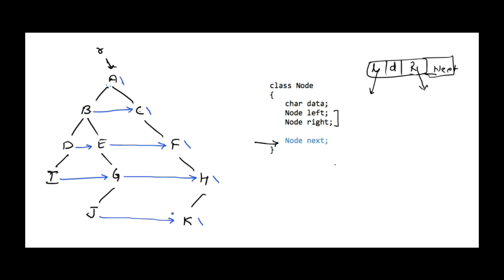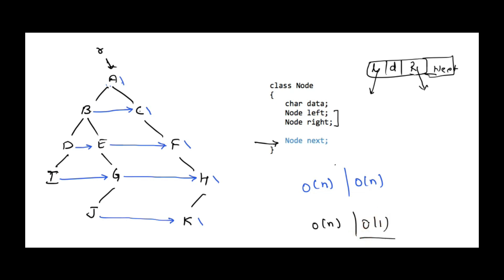We already discussed one solution in part one of this video — the link is given in the description. In part one we discussed a solution using level order traversal that takes O(n) time and O(n) extra memory in the form of a queue. In this video we are going to discuss a solution which will take linear time and constant extra memory, so we will not be using any queue or any extra data structure.